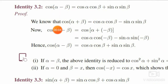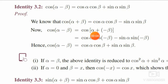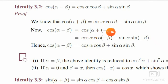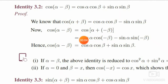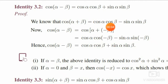Take the left hand side: cos of alpha minus beta. We modify it slightly as cos of alpha plus bracket minus beta. Now it looks like cos of alpha plus beta, so we use that identity to prove it. Using the cos of a plus b formula — cos a cos b minus sin a sin b — we substitute minus beta in place of b (beta).